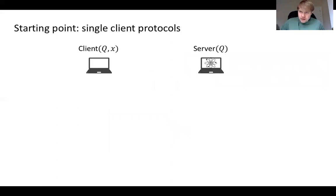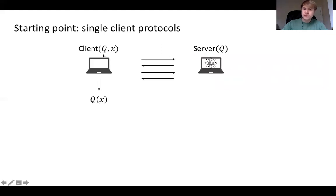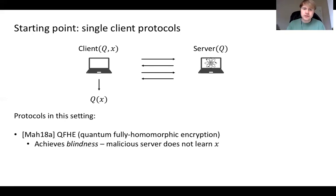This is what this work studies. Prior work on protocols that can be interpreted as single-client, single-server, two-party protocols involves a setting with one client having a quantum circuit Q and classical input X — so this client is classical — and a quantum server. They interact back and forth, and at the end the client outputs Q of X.